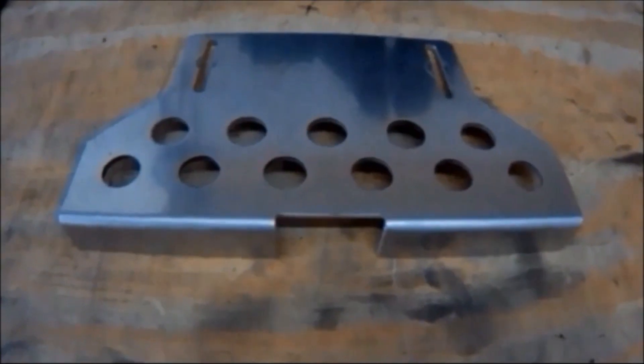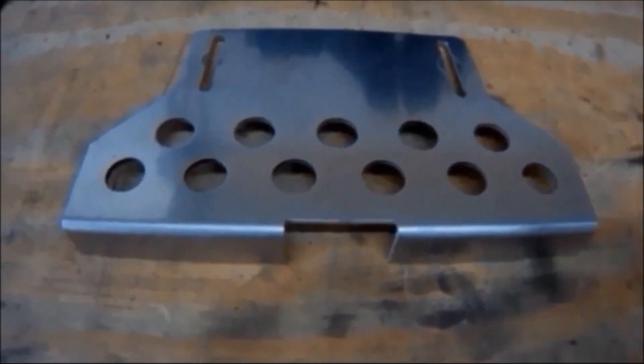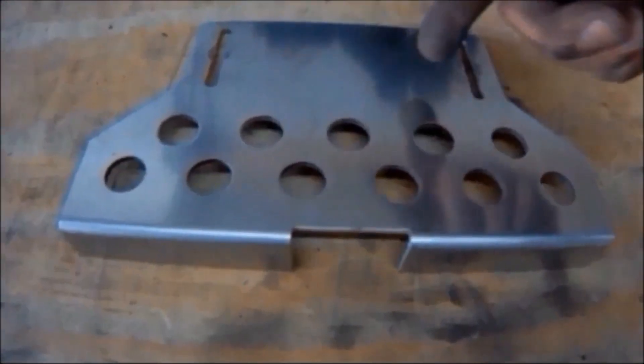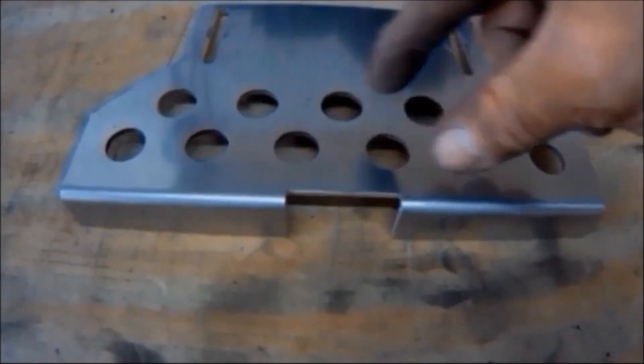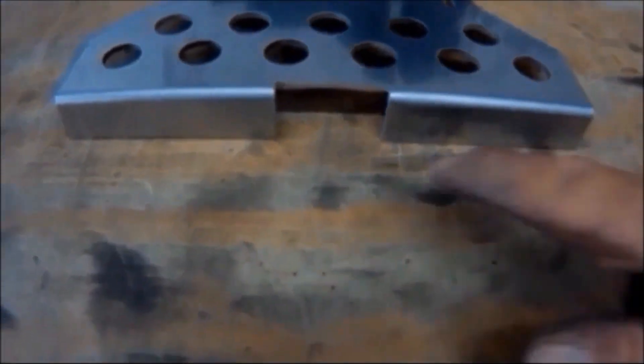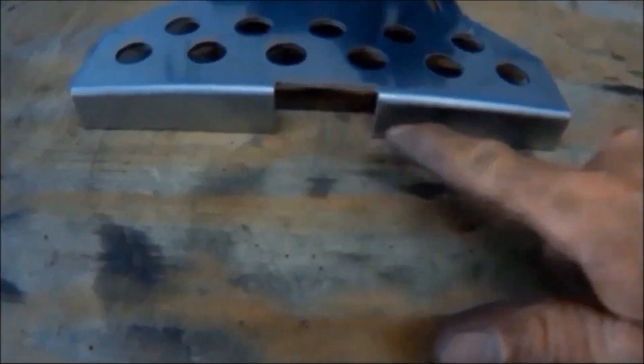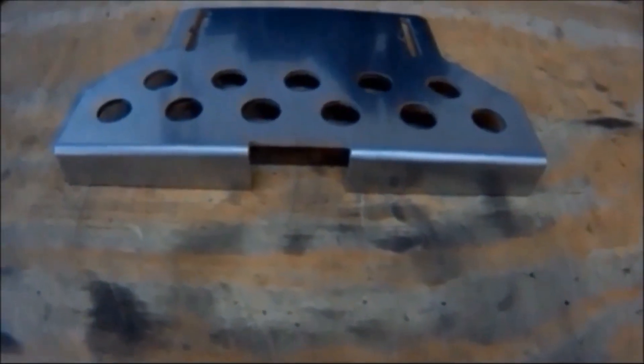This bracket is going to be the easiest out of the three to modify. Really all I have to do is just continue with their theme. I will enlarge all of these holes so they'll be the same theme, larger holes, and then I'll put some holes along the edge here, and that'll be it for that piece.